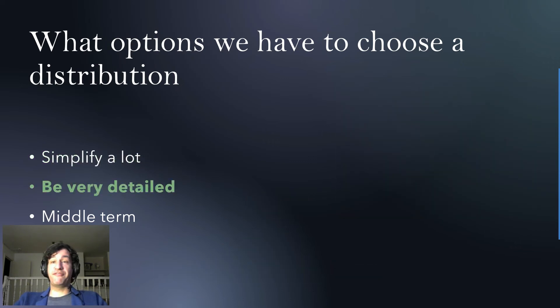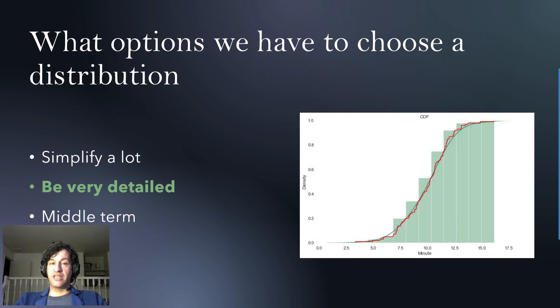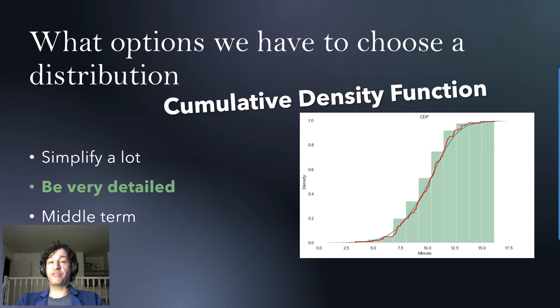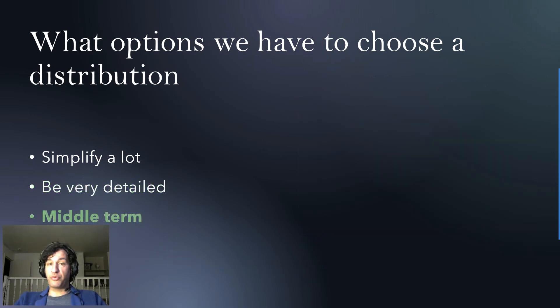The second one is to be very detailed. If you're an AnyLogic user, this is very similar to using custom distributions. So, what you do here is to just take the empirical data and you use that directly by organizing them by an order and create a cumulative density function that will allow you, by using linear interpolation, to generate a sample of that data. So, you can do that. And we'll talk a bit more about this in a bit.